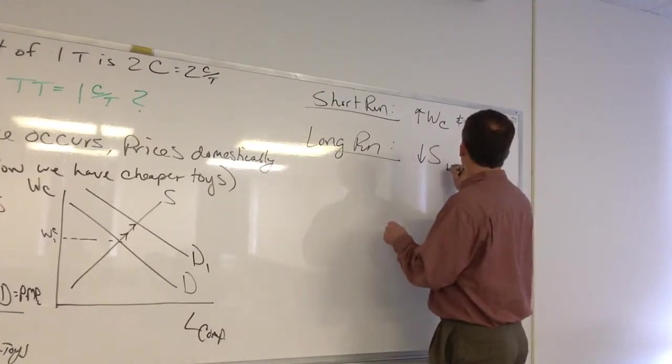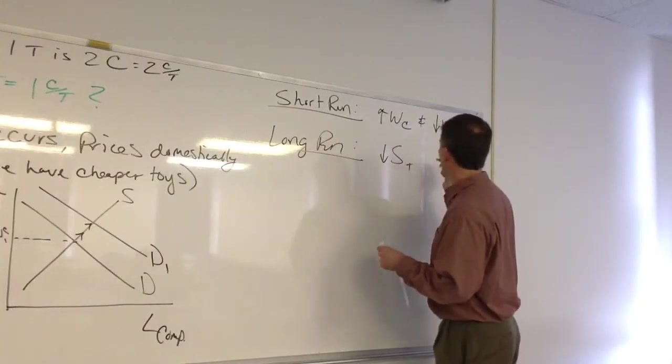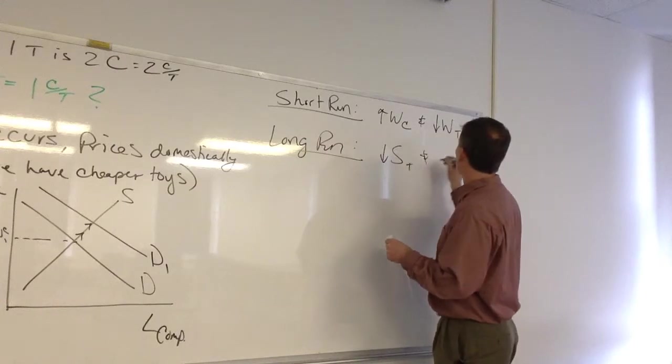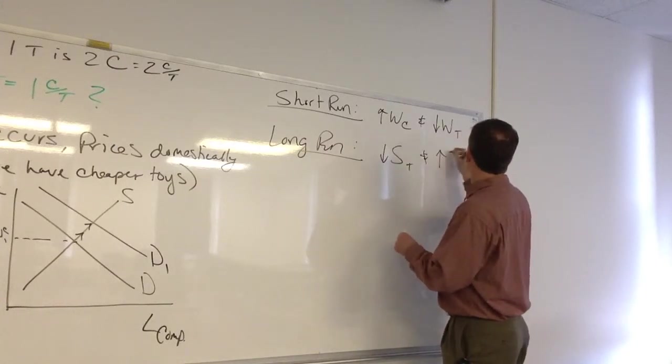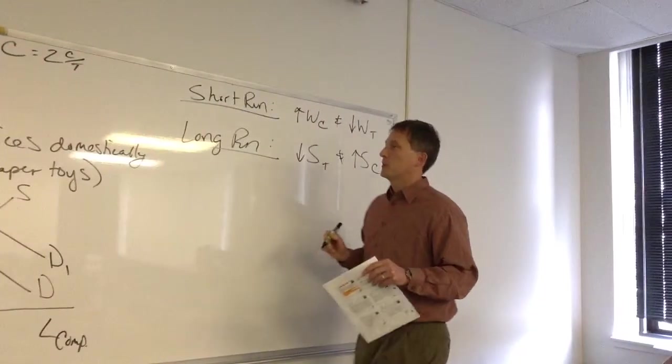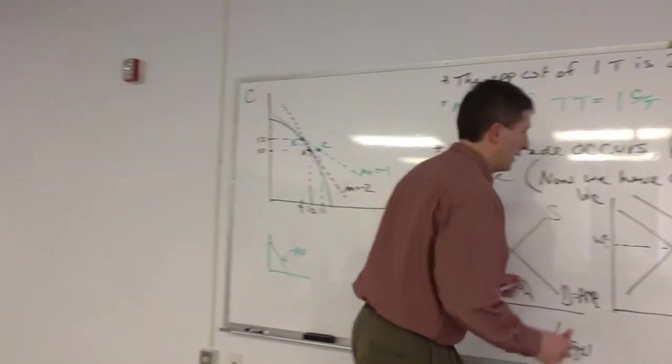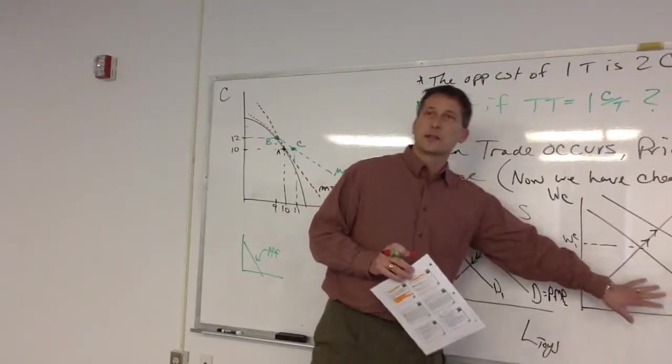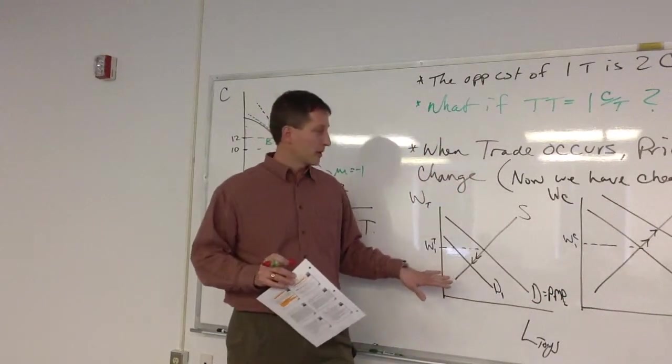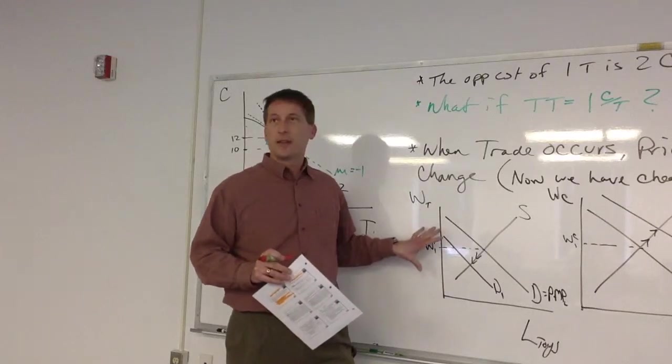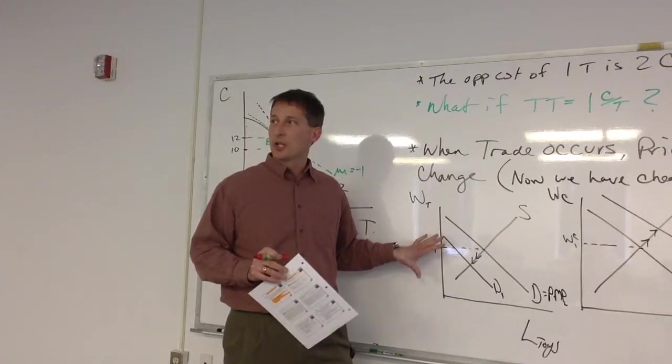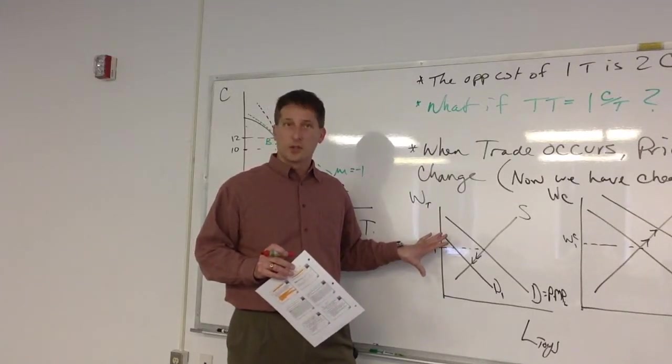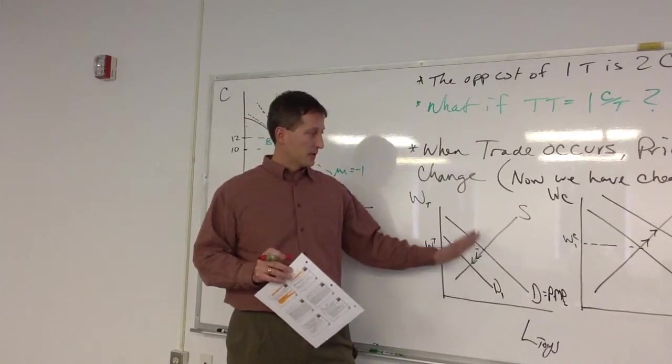that short video on maybe retraining the labor force. But that would be the longer run transition, is a decrease in the supply of toy makers, toy labor, remember we're in the labor market, and an increase in the supply of computers. And you can see how, what our prediction in the long run is for the payments to labor. Do these tend to diverge from each other or converge? Converge.